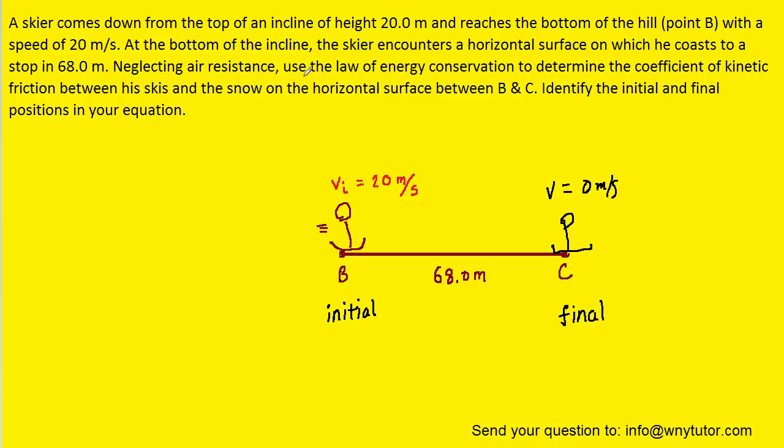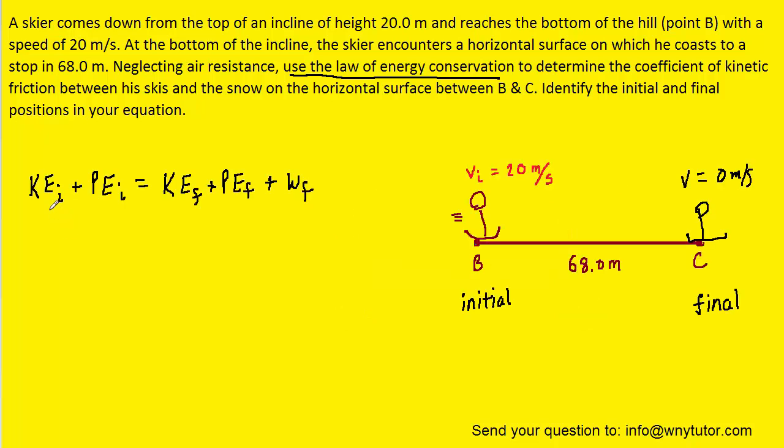Again, we are asked to use the law of energy conservation, so let's write out that law. On the left-hand side of the equation, we have the initial energies, which are marked KE and PE with little i subscripts to represent initial. Of course, KE is kinetic energy and PE is potential energy. We have the corresponding final values on the right-hand side of the equation. And then we also have this energy term here, which is going to represent the work done by friction as the skier is brought to rest.